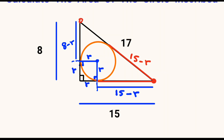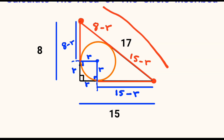We also have a common point here, and the distance from that common point to that tangent is 8 minus r, so we also expect that this distance to be equal to 8 minus r. But the total length of this hypotenuse we know has been given as equal to 17.